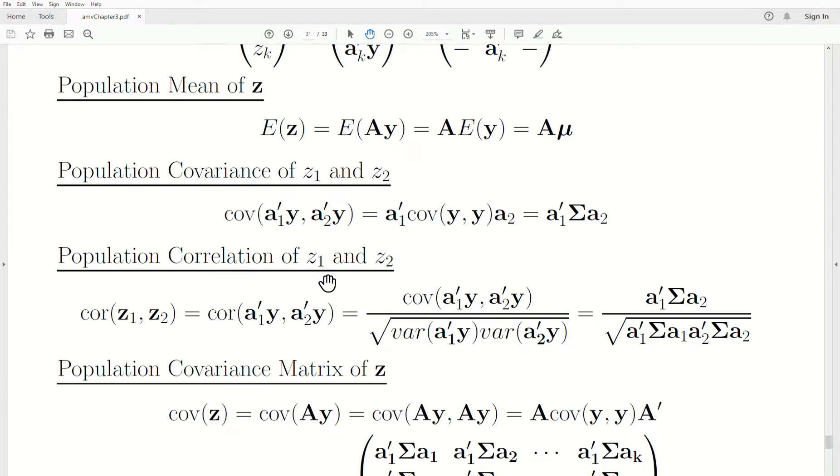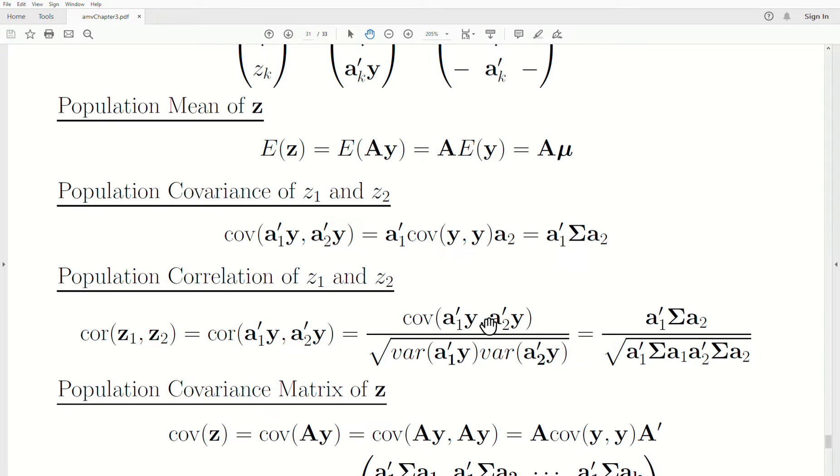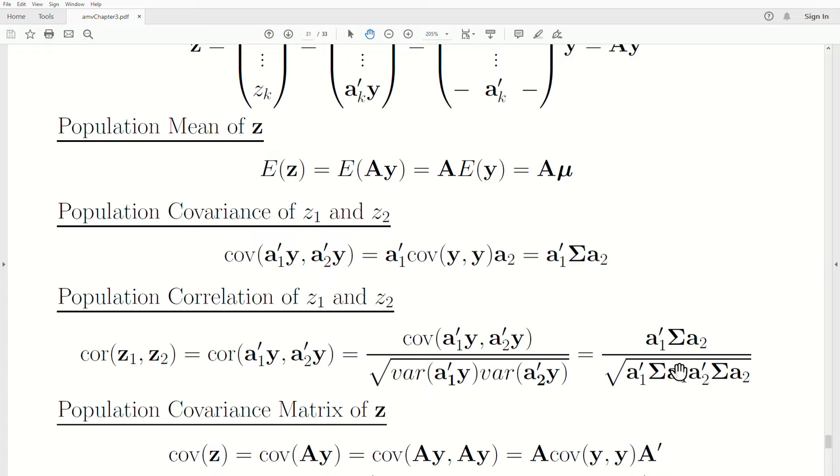Now the population correlation between z1 and z2 is denoted by the correlation of z1 and z2. We replace what z1 and z2 are: A1 transpose y, A2 transpose y. Correlation is the covariance divided by the square root of the product of the variances. The covariance is A1 transpose sigma A2. The variance of A1 transpose y is A1 transpose sigma A1. The variance of A2 transpose y is similar. Is this a legal way to represent matrices? Yes. A is k by 1, and A2 transpose is 1 by k, so it conforms. This is a number, a scalar.